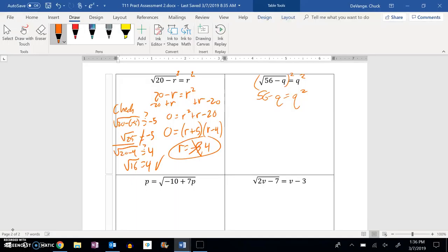And I have a quadratic, so I'm going to get it equal to 0. So add Q to both sides and subtract 56. And I get 0 equals Q squared plus Q minus 56.